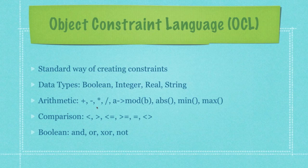Just to review the object constraint language — you don't really need to worry about all the data types, but these are the basic arithmetic types: addition, subtraction, multiplication, division, modulus (which returns the remainder), absolute value, minimum, and maximum. With comparison operators, the main thing to worry about is equal to and not equal. And then you have your boolean and, or, xor, and not.